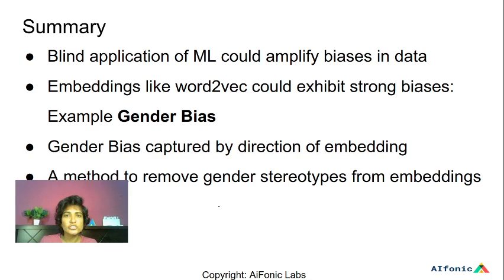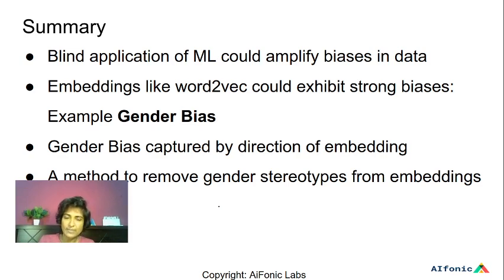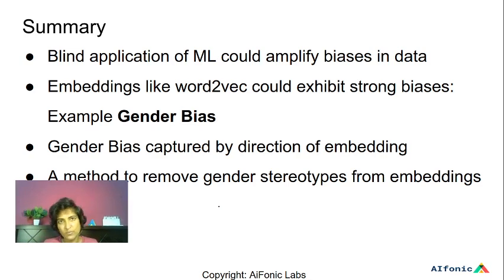Blind application of machine learning models could amplify inherent biases in data. For instance, embeddings like word2vec could exhibit strong biases like gender bias, which when used in downstream applications could lead to unintended consequences. Gender bias can be captured by the direction of the embedding, as the authors claim, and we'll see that more in later slides. A method to remove gender stereotypes from word embeddings is proposed by the authors.